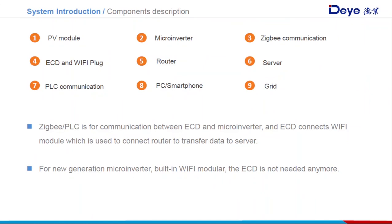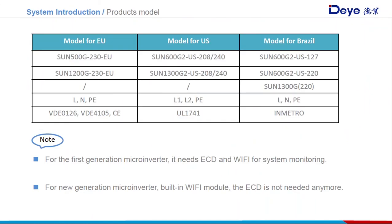Deye microinverters have three series: 230V 50Hz, 208V/240V 60Hz, and a third series, respectively for the Euro market, American market, and South African market. These products are certified by VDE, UL, and EMC.